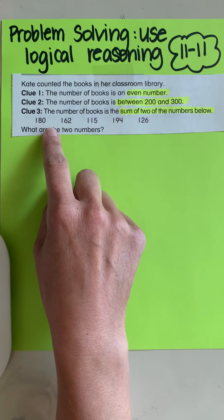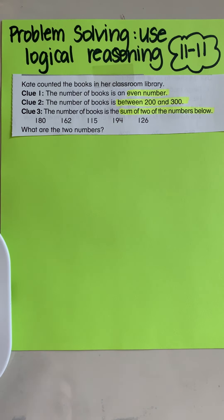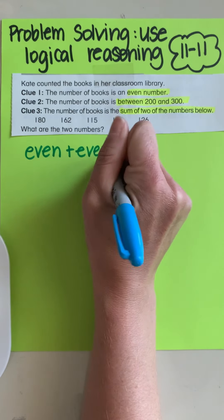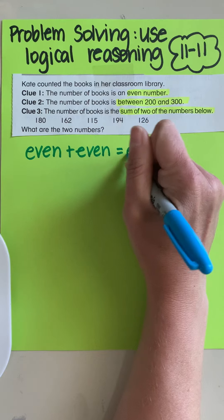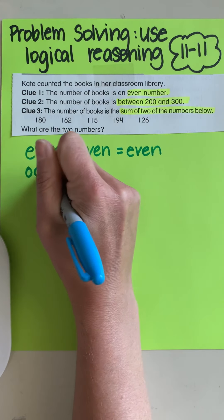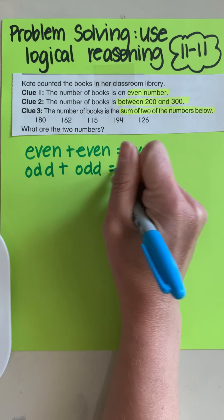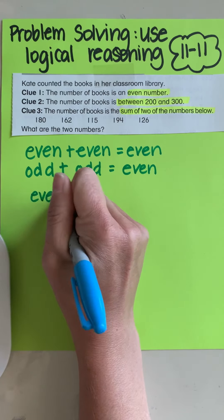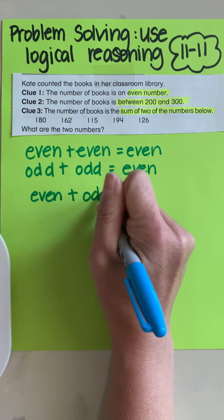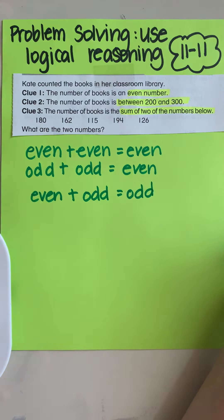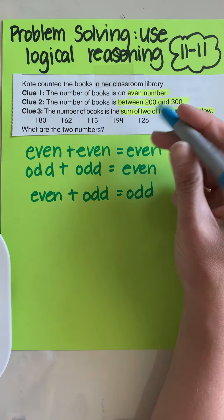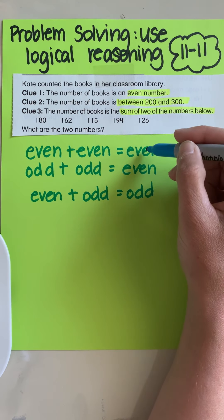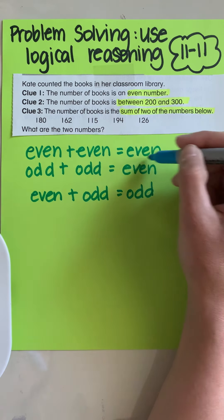Now, whenever you add an even to an even number, even plus even, it will always equal an even number. Odd plus odd equals an even number. But when I mix them, even plus odd equals odd. So this would be like zero plus two, two plus four, six plus eight. It will always be an even number. Odd plus odd, three plus one, five plus seven, always going to be an even number. Now when I mix these two, that's when we get odd numbers.